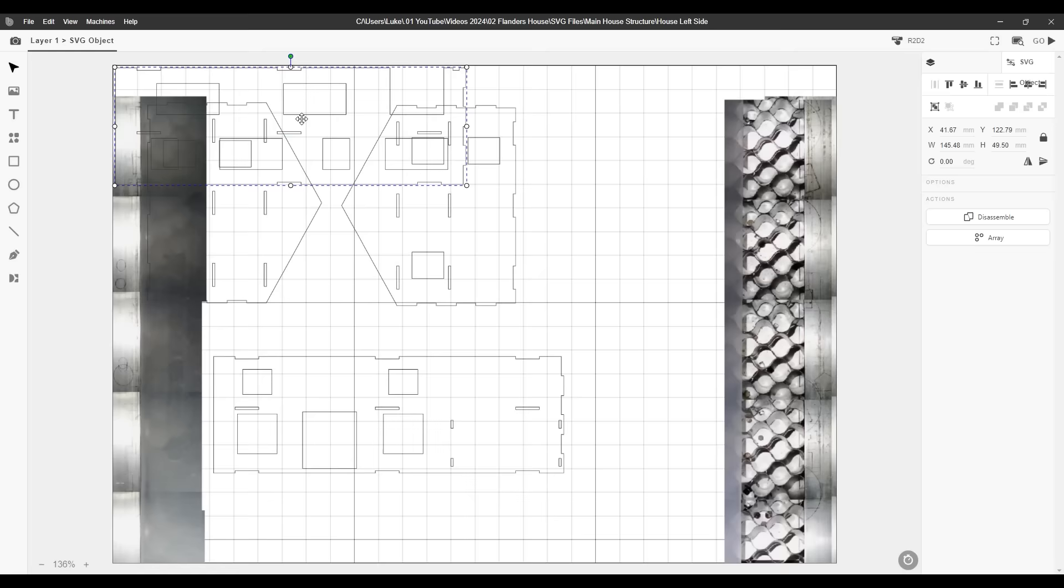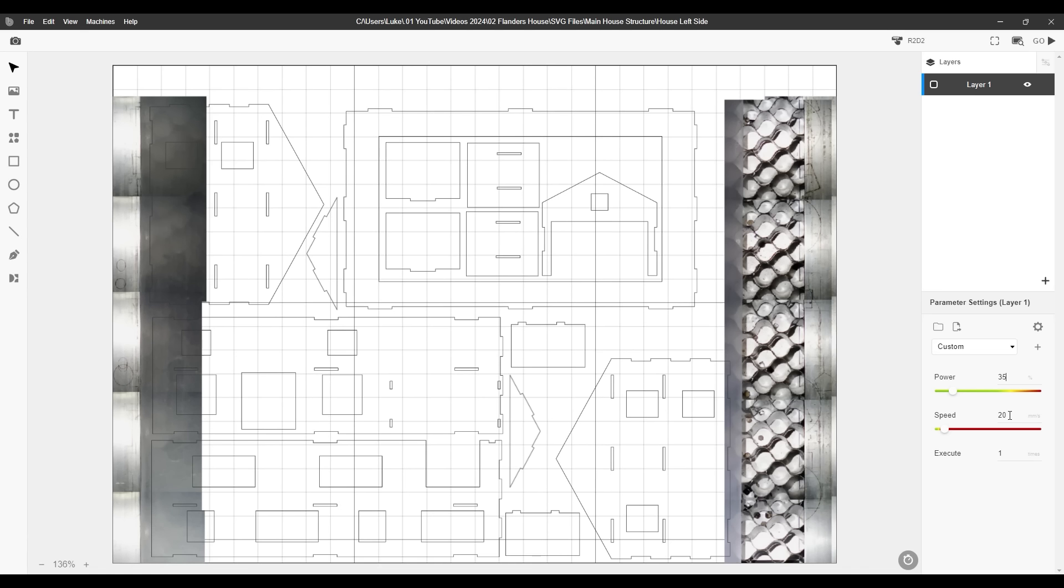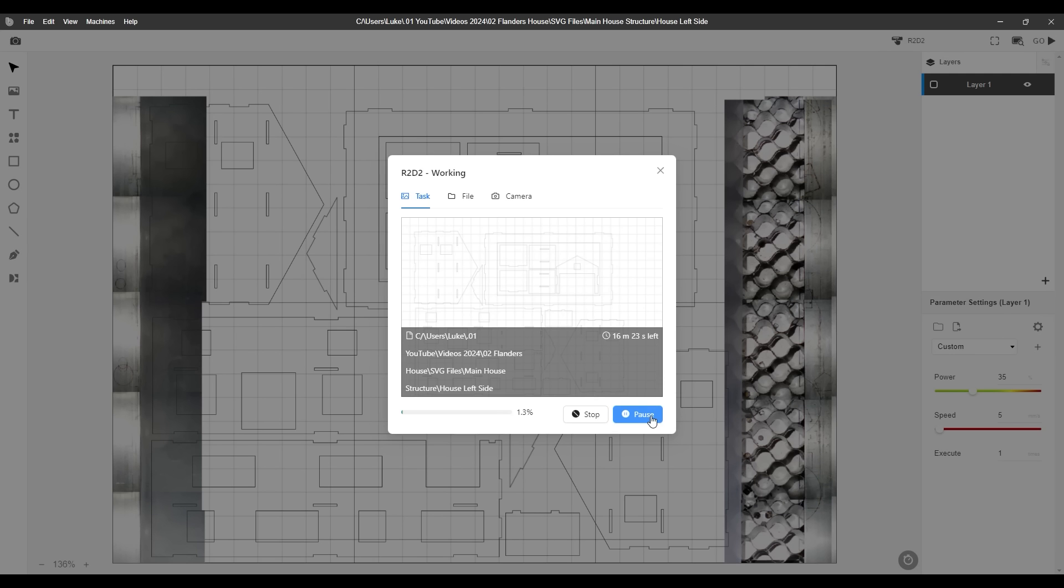Now each SVG file can be opened and positioned making the most of the acrylic sheet. With all the parts aligned I set the power as needed and proceed to start the cut.